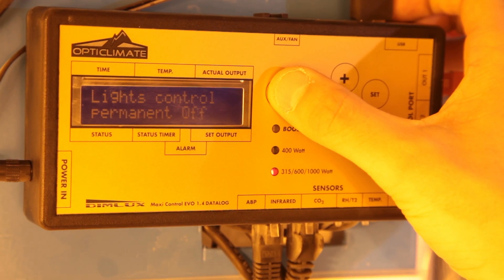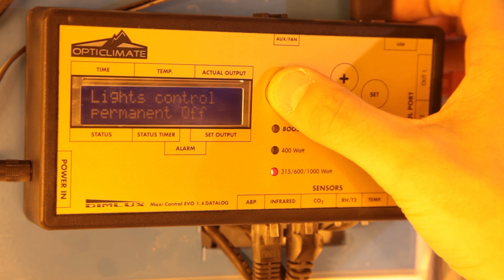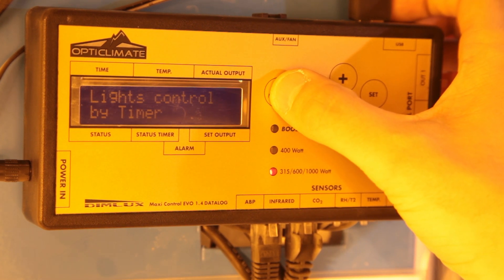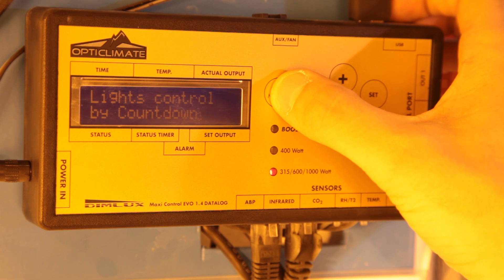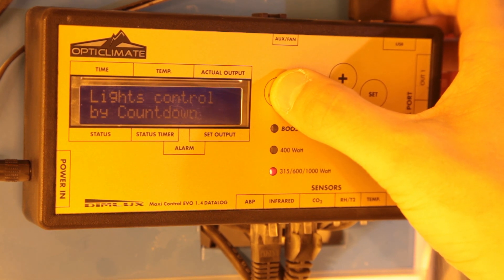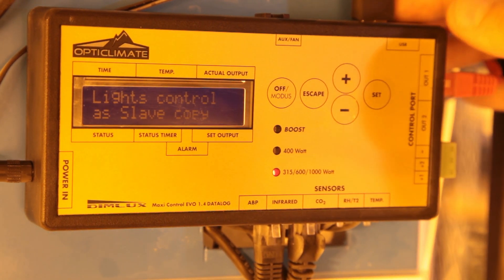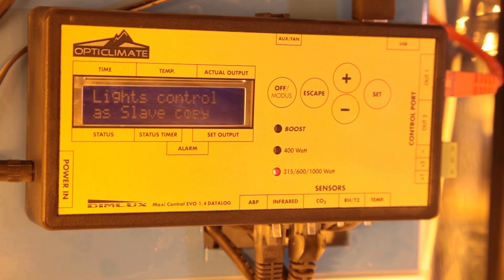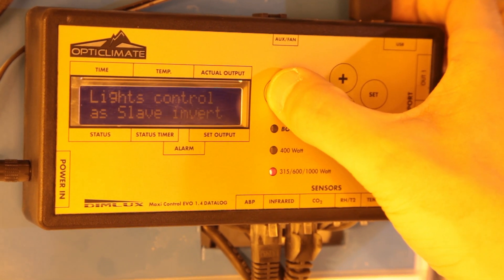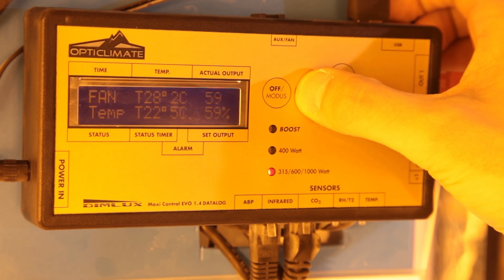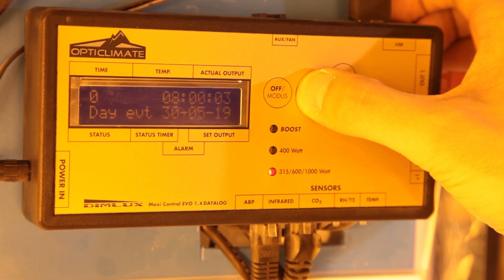Each time you hit the button on the left hand side, the off modus button, you'll move through a list of options. First one, lights permanently off and lights permanently on, do exactly what you'd expect. Then you've got lights controlled by timer, lights controlled by countdown, we'll go into this a bit later in the video. Lights controlled as a slave invert and lights controlled as a slave copy. These two are used when you're linking two maxi controllers together so this isn't something that we're going to go into today, it's a little bit more in depth. Once you've found the option that you're looking for, hit set. For most growers this is going to be lights controlled by timer. We'll show you how to choose your lighting schedules in a second.